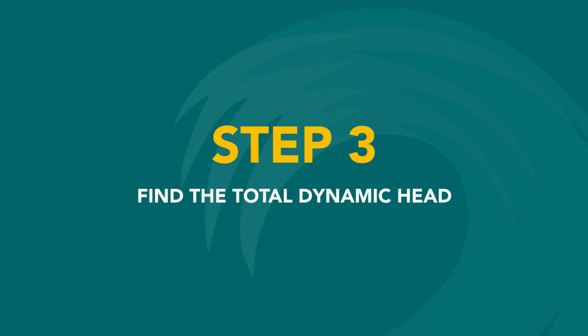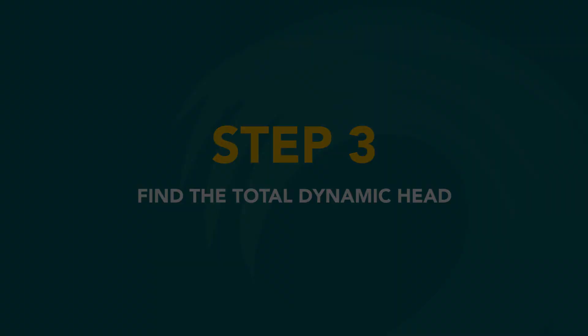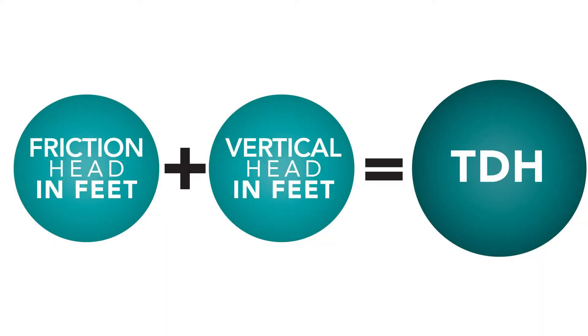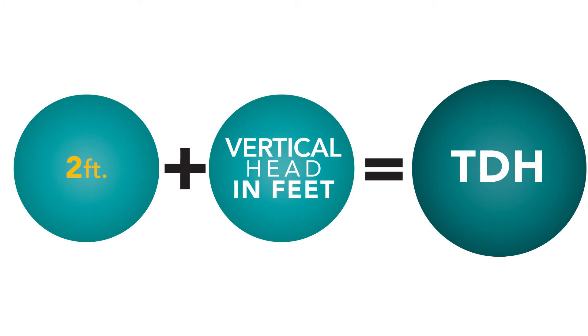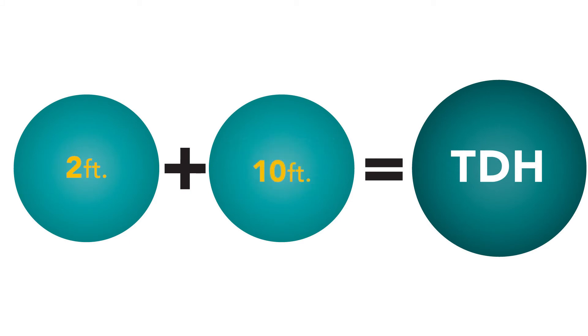Now it's finally time to calculate the TDH. We'll simply add the friction head of 2 feet to the vertical head of 10 feet, to find that the TDH is 12 feet.